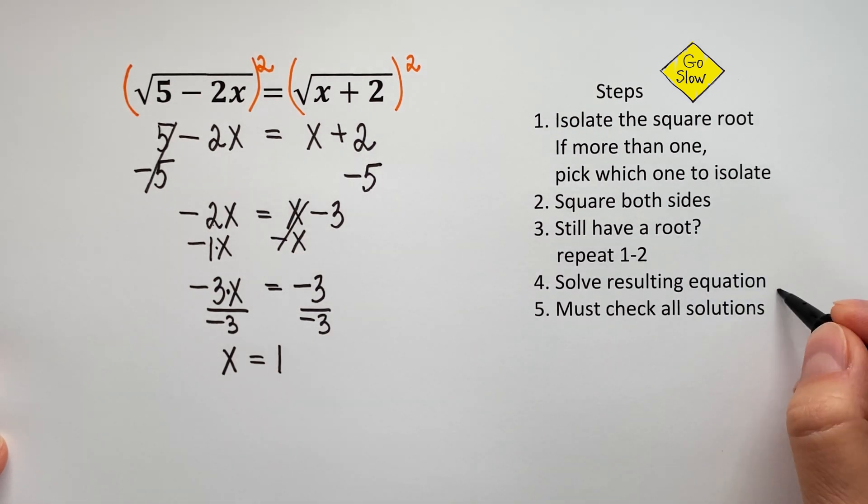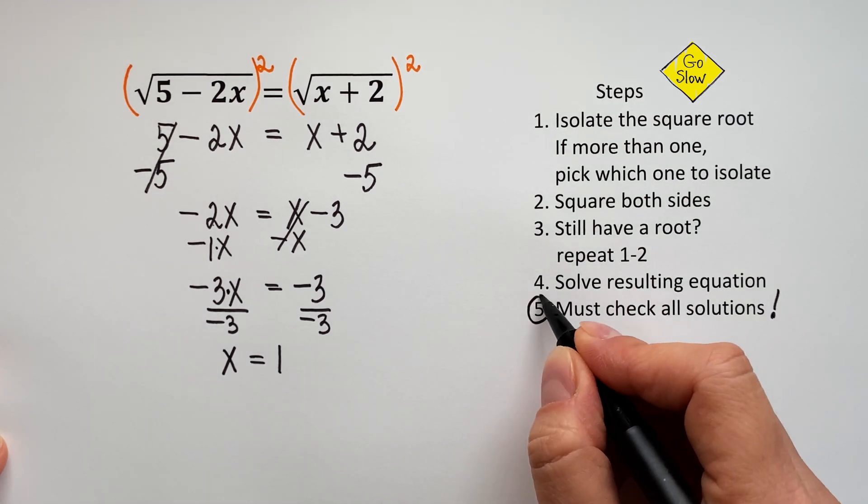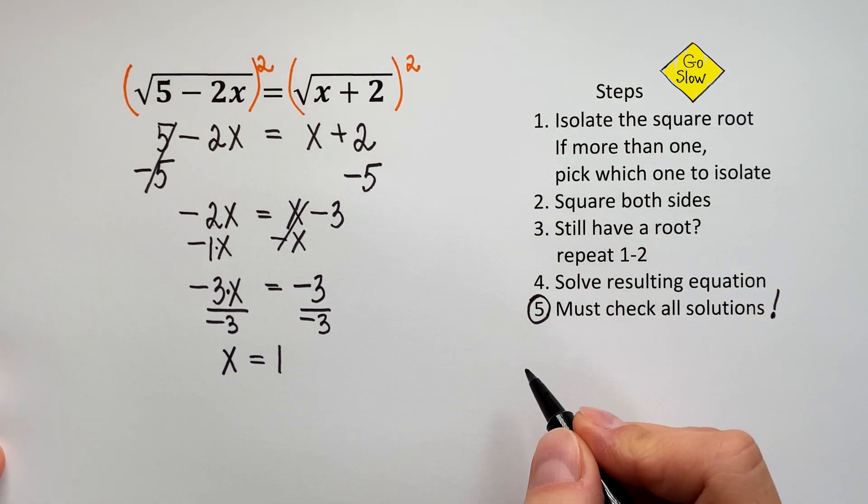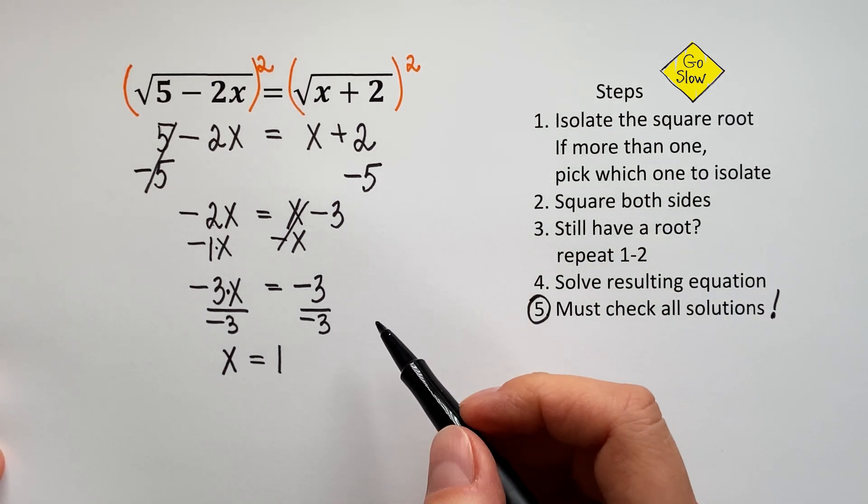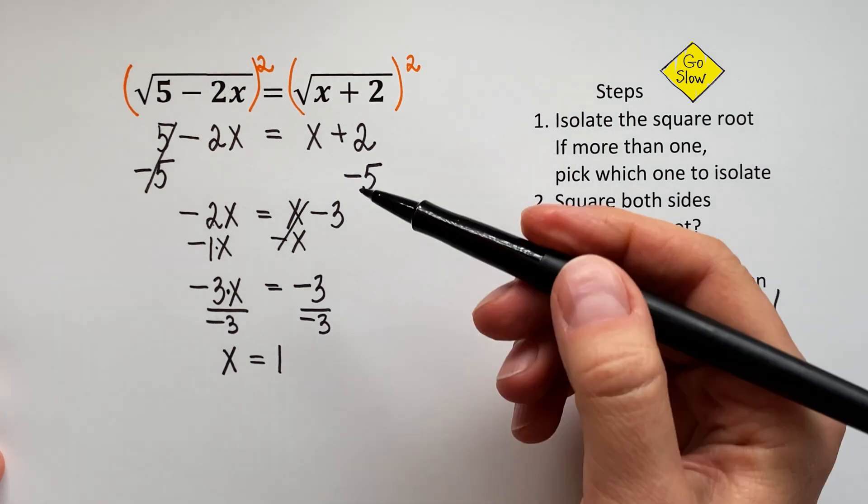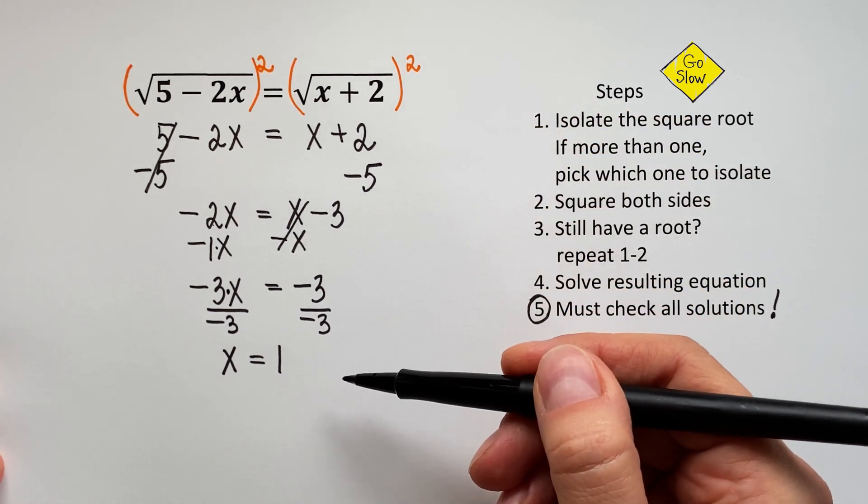Now, this is important. We must check all solutions. But why? Why do I have to check my solution if I didn't do anything wrong?